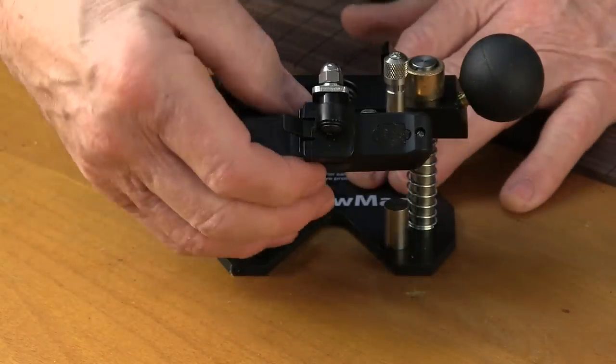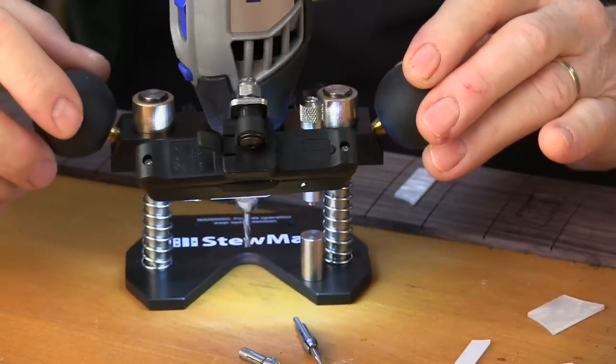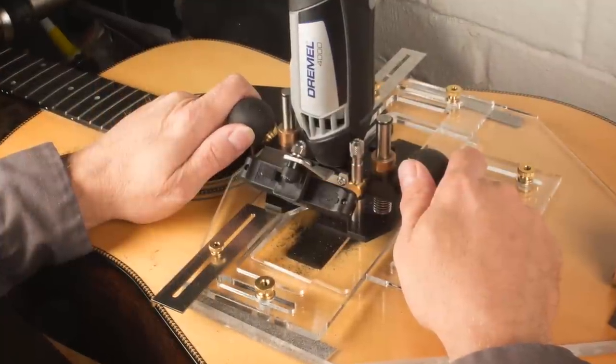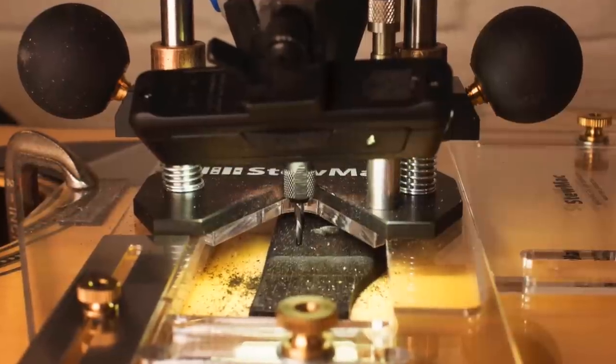Our plunge base will turn your regular Dremel tool into an accurate guitar-sized precision router. It's great for doing inlay work and cutting saddle slots. I can cut a saddle slot or clean one out three times faster than ever before.